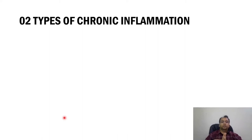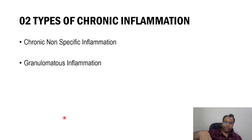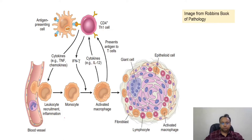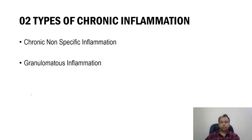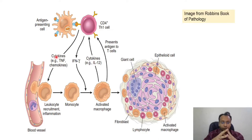Chronic inflammation is of two types. One is chronic non-specific inflammation and the second is granulomatous inflammation. It could be non-specific or a specialized form of chronic inflammation known as granulomatous inflammation. We have already discussed chronic non-specific inflammation, in which there is infiltration by lymphocytes, macrophages, and fibrosis is present. But granulomatous inflammation is a specialized variety of chronic inflammation.